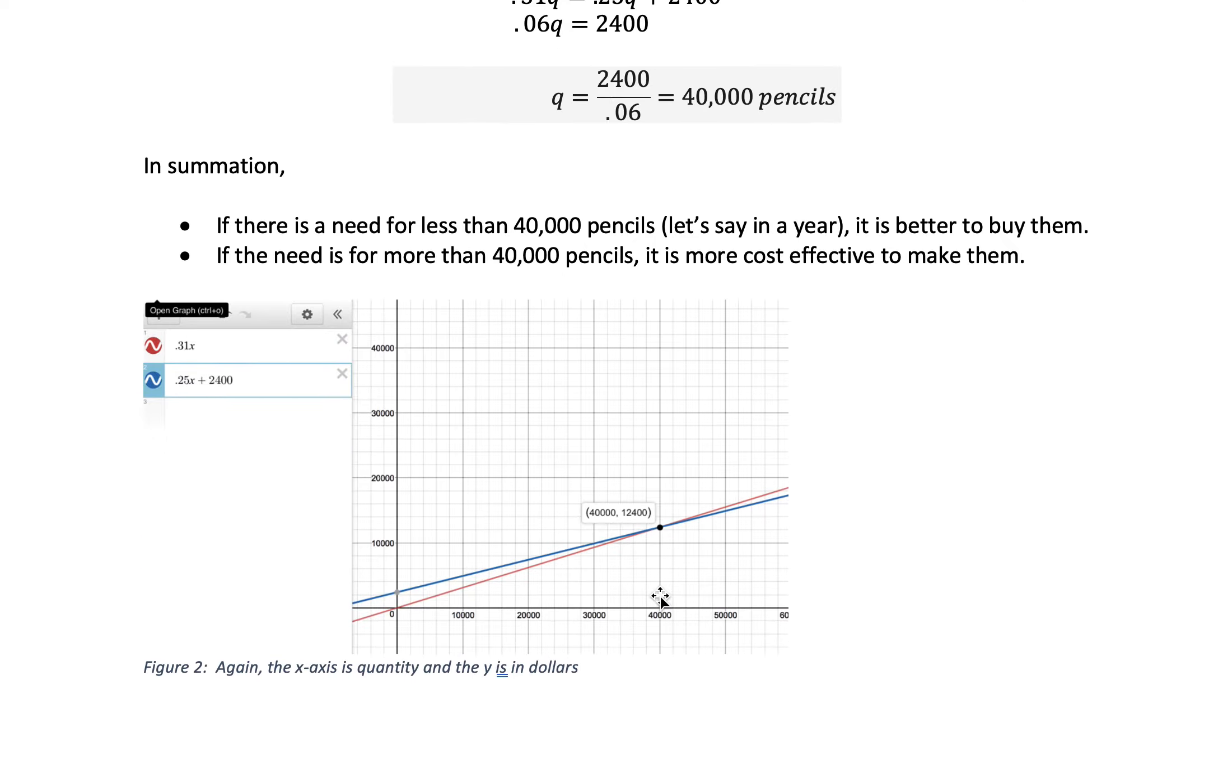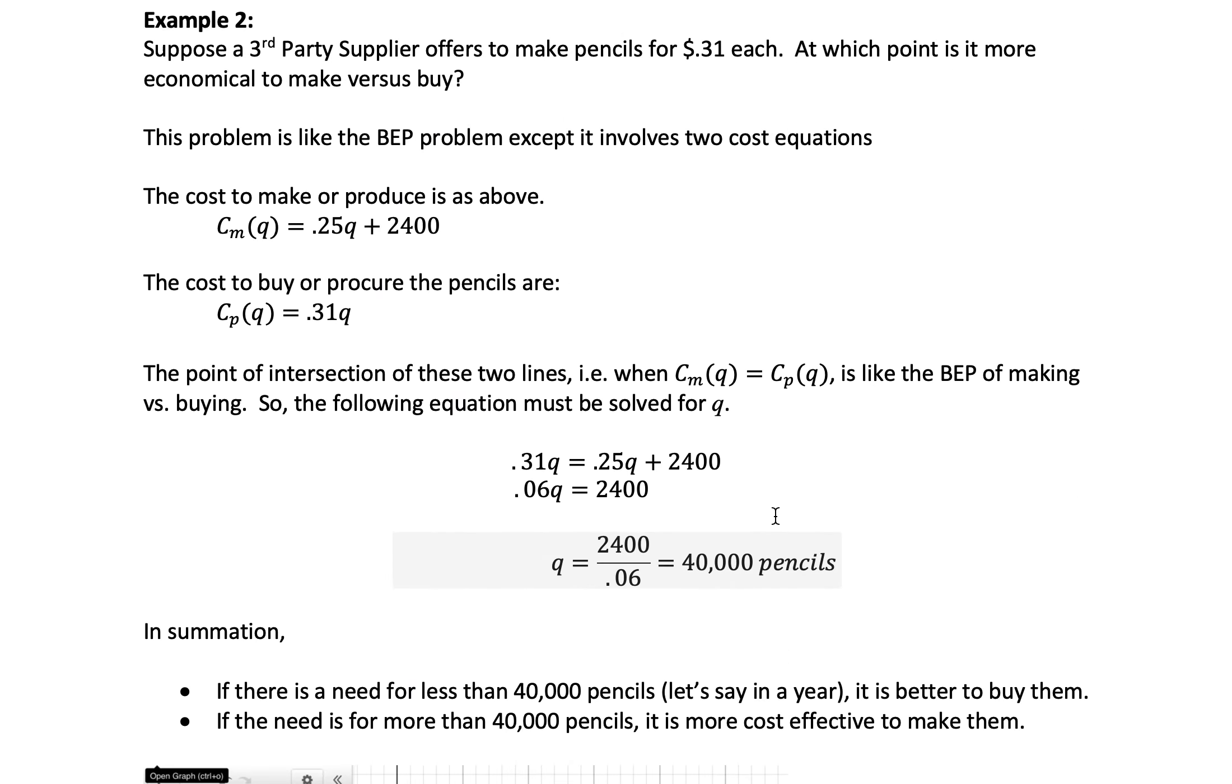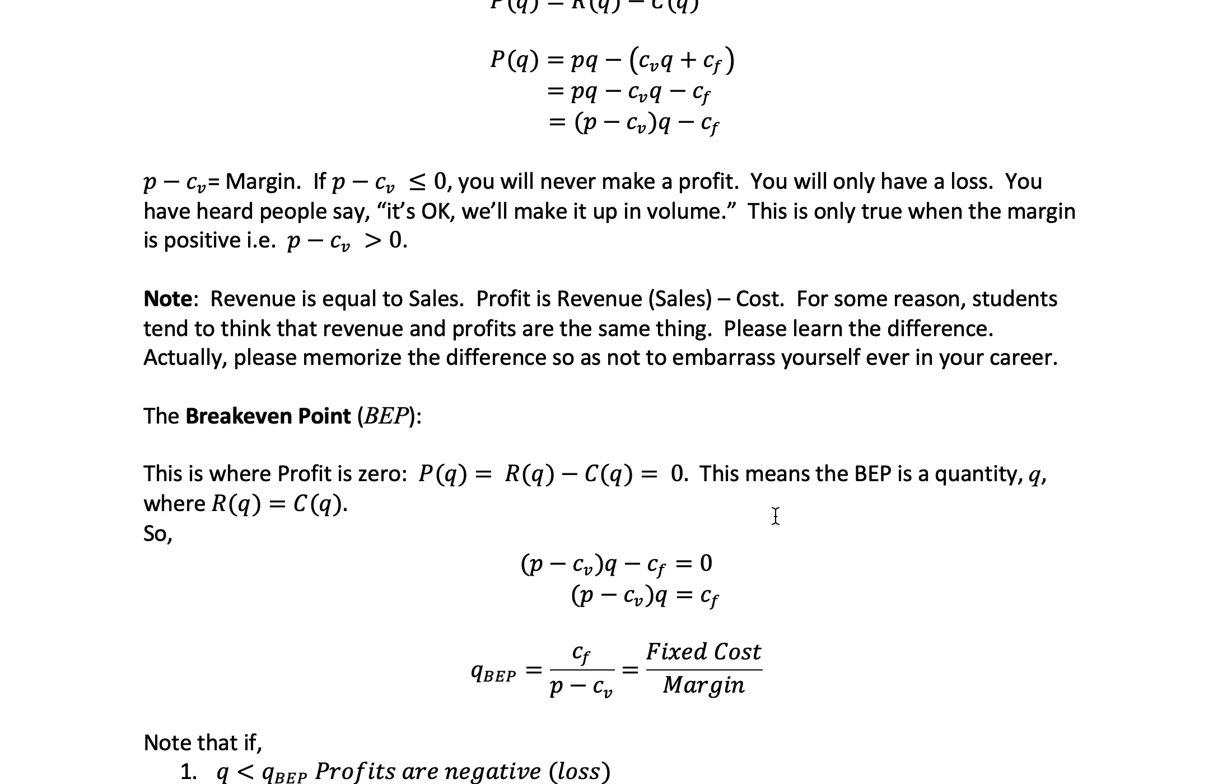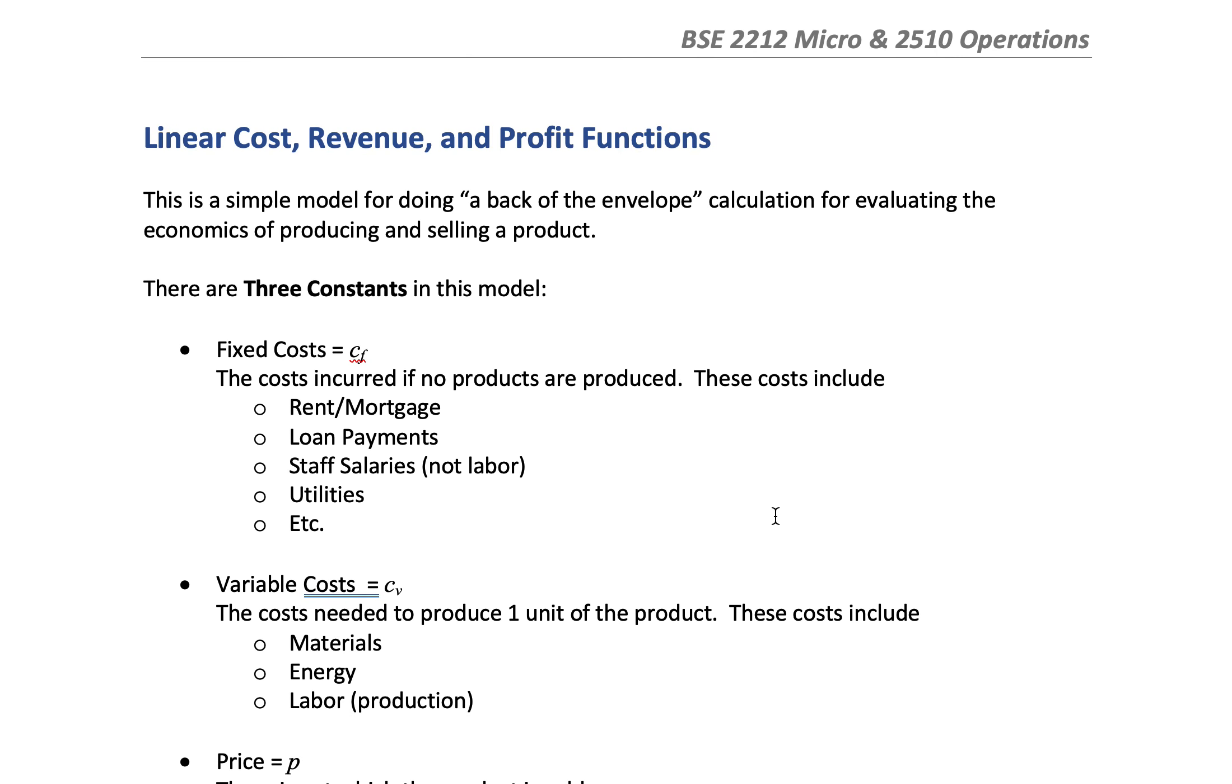If I sell less than 40,000 pencils, it's advantageous for me to buy the pencils from the other supplier. If my sales are going to be more than 40,000 pencils, then it's more advantageous for me to make the pencils. That's the small introduction to this simple but powerful back-of-the-envelope concept for seeing if a business idea is valid or not. Thank you very much, we'll talk to you again soon.